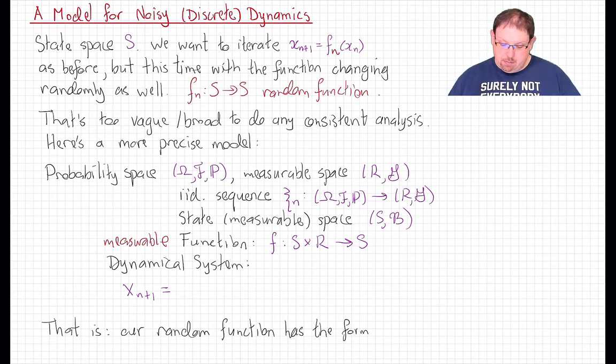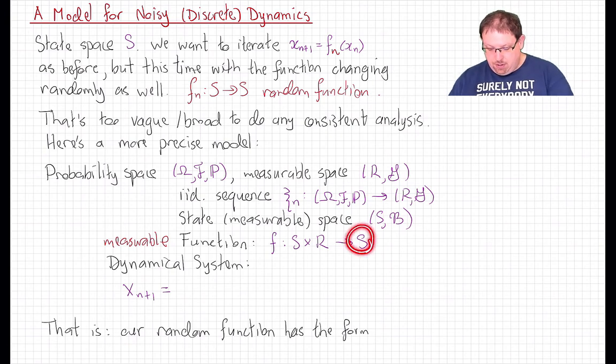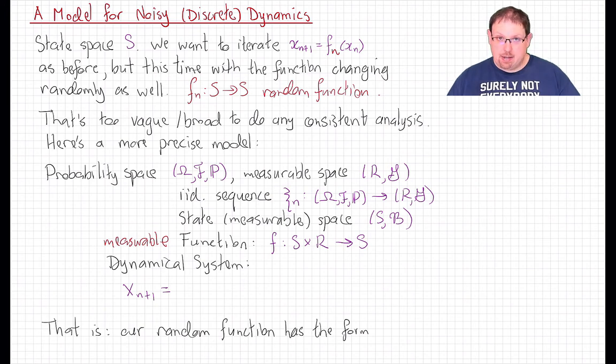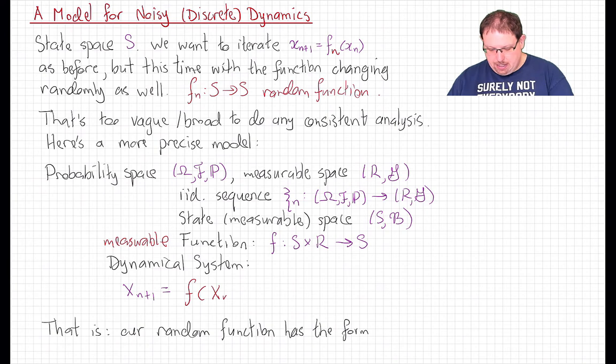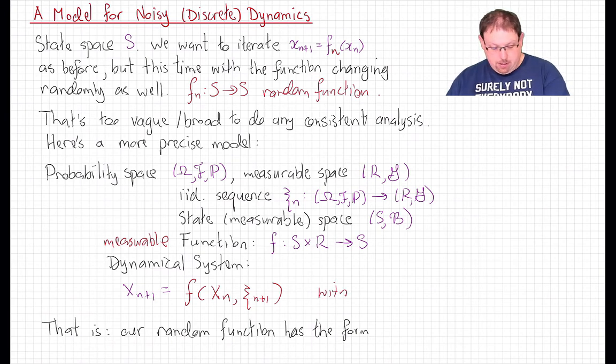So that is measurable with respect to the product sigma field B × G and the sigma field B in the range. And our dynamical system, then, is going to be a sequence of points in S, but they're going to be random points in S. So in fact, they're going to be S-valued random variables X_n, which are determined by the same kind of iteration that we did before. X_{n+1} is f(X_n, ξ_{n+1}).